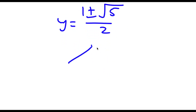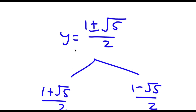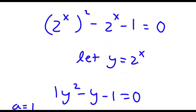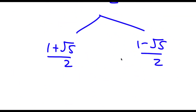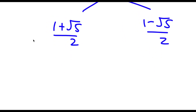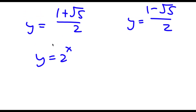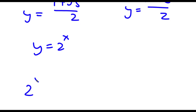So now this gives me two solutions. I have y equals 1 plus the square root of 5 over 2, and y equals 1 minus the square root of 5 over 2. However, remember that y equals 2 to the power of x. So let's start with y equal to 1 plus the square root of 5 over 2. Since y equals 2 to the power of x, we have 2 to the power of x is equal to 1 plus the square root of 5 over 2.